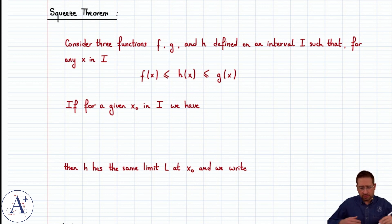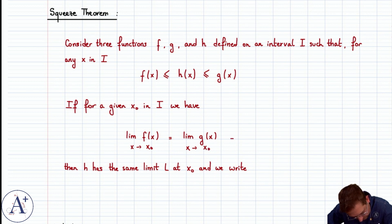And in addition, f and g have the same limit at x-naught, namely the limit of f as x approaches x-naught is equal to the limit of g as x approaches x-naught, call it L.